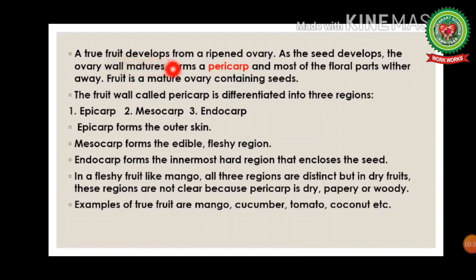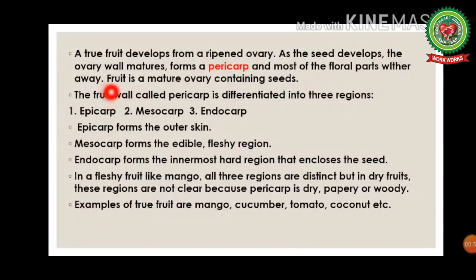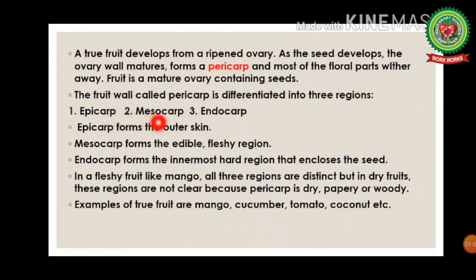A true fruit develops from a ripened ovary. As the seed develops, the ovary wall matures and forms a pericarp, and most of the floral parts wither away — meaning they fall off. The fruit is a mature ovary containing seeds. The fruit wall, called the pericarp, is differentiated into three regions: epicarp, mesocarp, and endocarp.